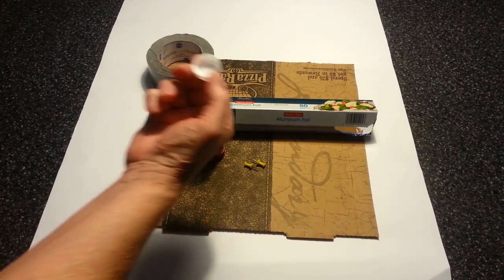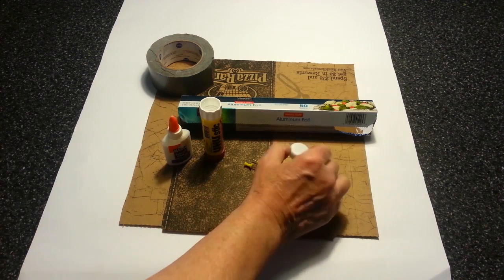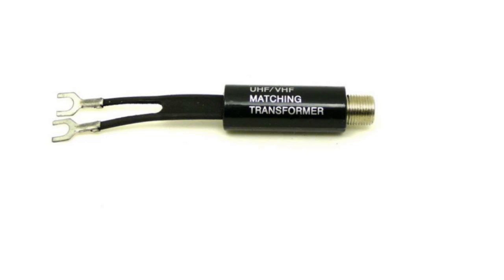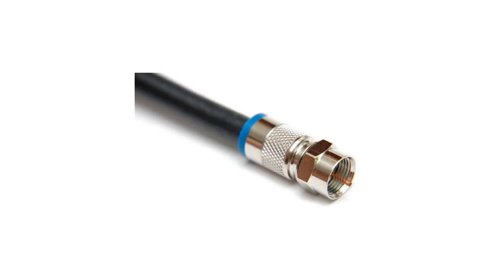And the cap from a water bottle. Finally, the transformer to connect the coax cable from the TV to the antenna. And we are assuming you already have a coax cable.